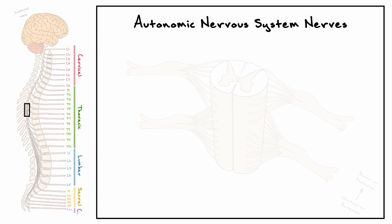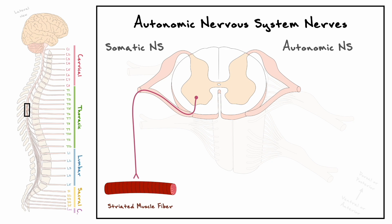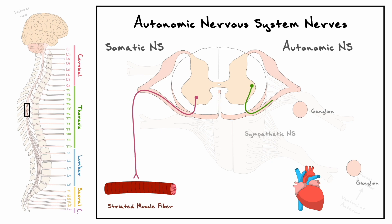The main difference between the somatic and autonomic nervous system when it comes to the spinal cord has to do with the processing of the efferent motor command. Motor neurons from the somatic nervous system will leave through the ventral root and go on to directly synapse with striated muscle fibers for voluntary control. On the other hand, the sympathetic and parasympathetic branches use intermediate ganglions before reaching their targets such as the heart. The first neuron is usually referred to as a preganglionic neuron and the second as a postganglionic neuron.